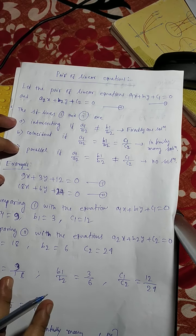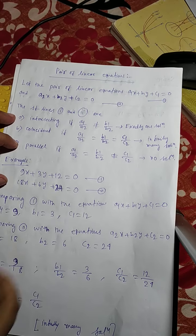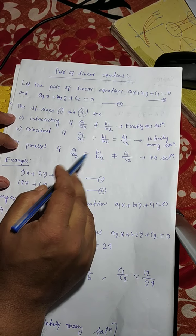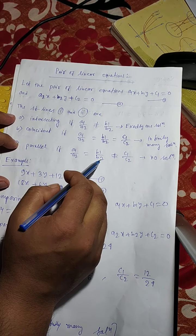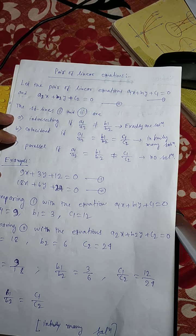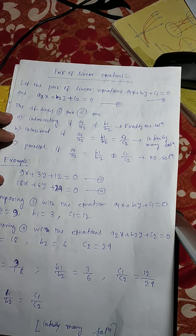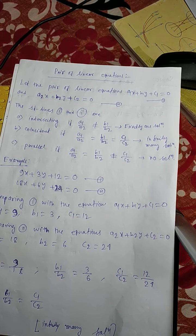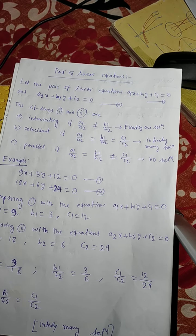And case C: lines are parallel if a1 by a2 equals to b1 by b2, but not equal to c1 by c2. In this case, equations 1 and 2 have no solution.